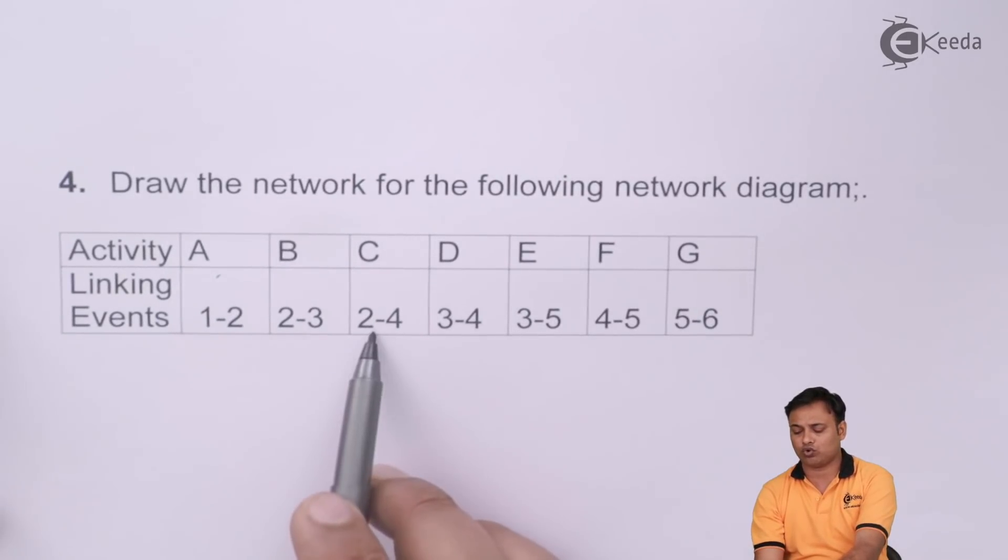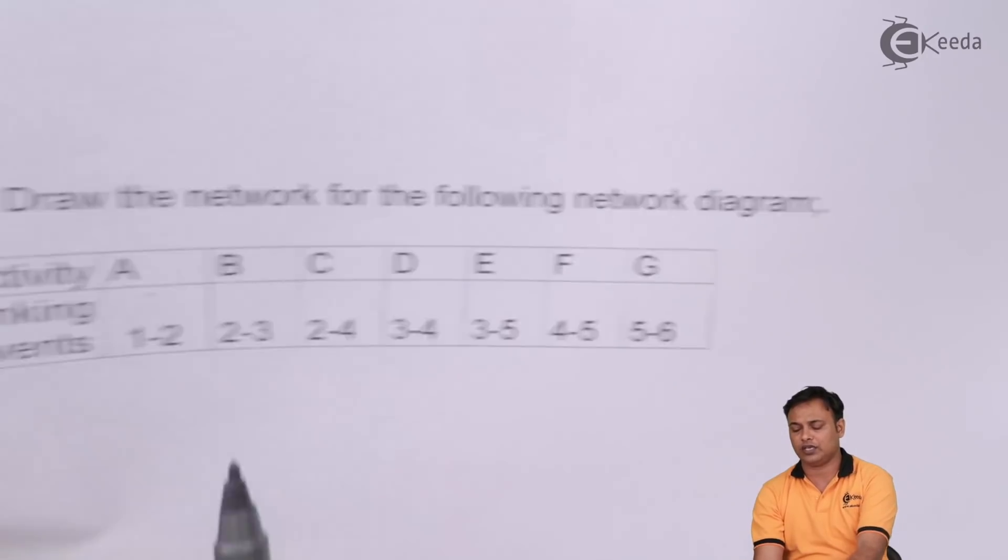Then we have 2 to 3, 2 to 4. There are 2 activities from 2. 2 to 3 is B, 2 to 4 is C.